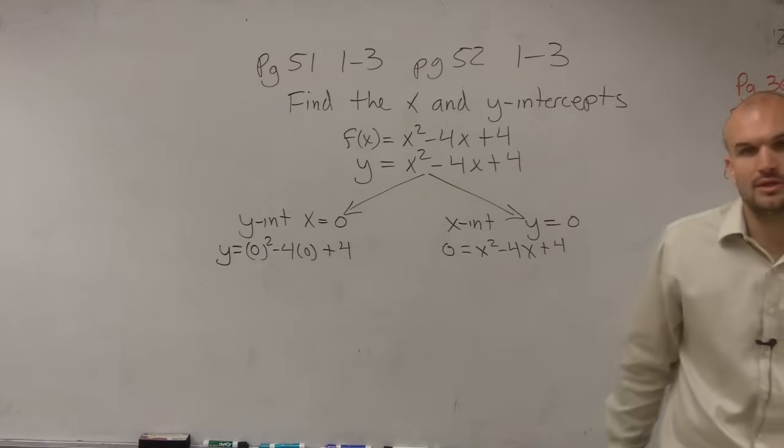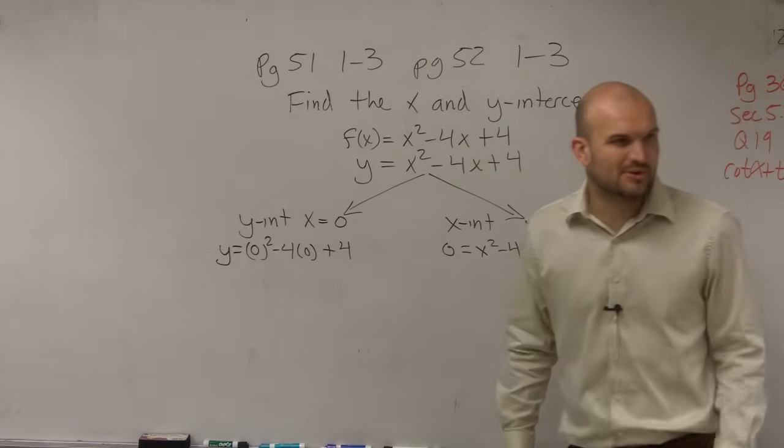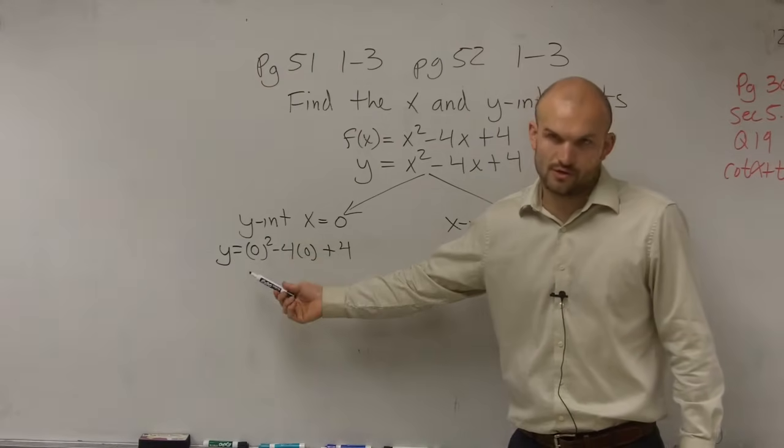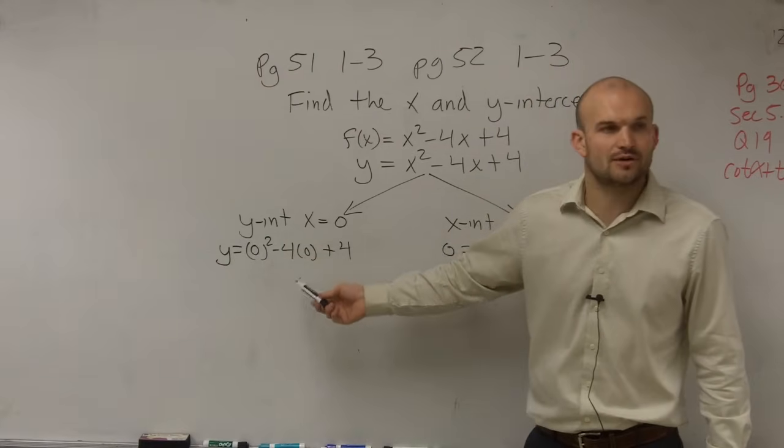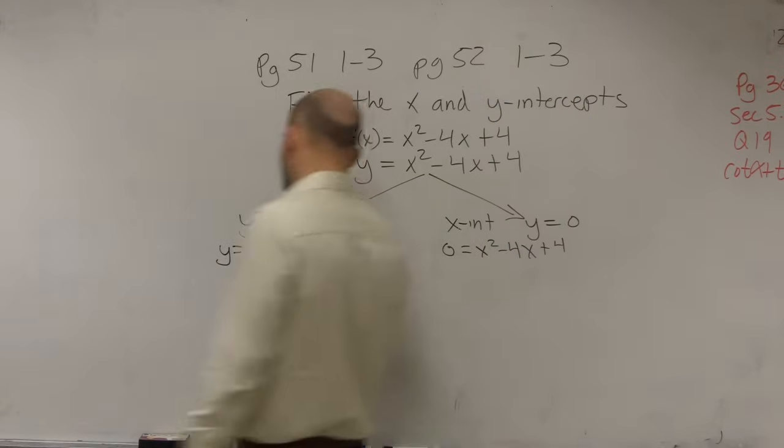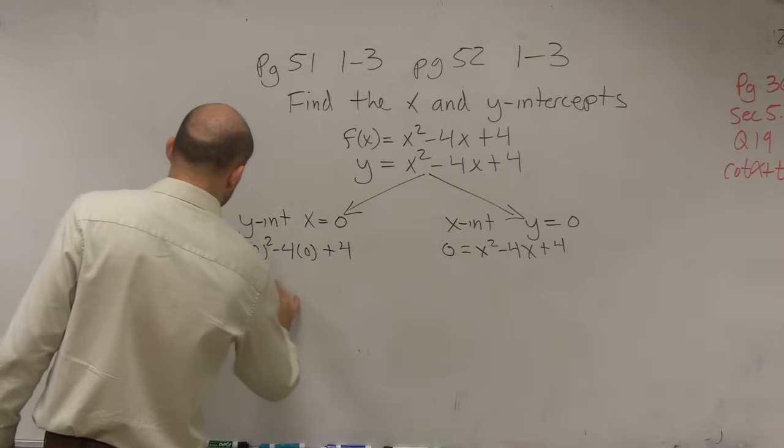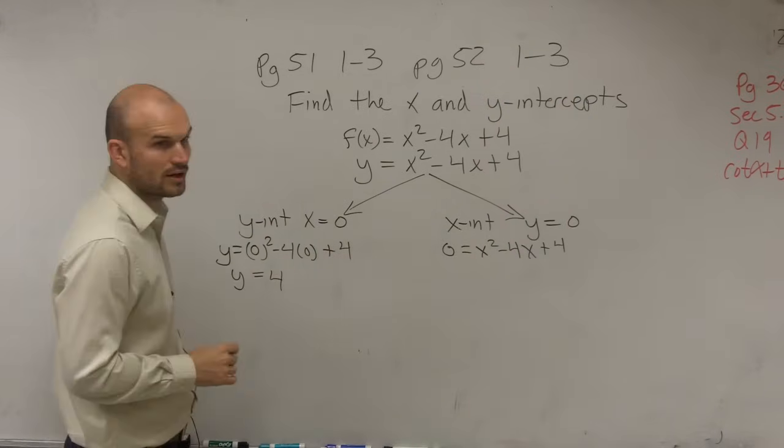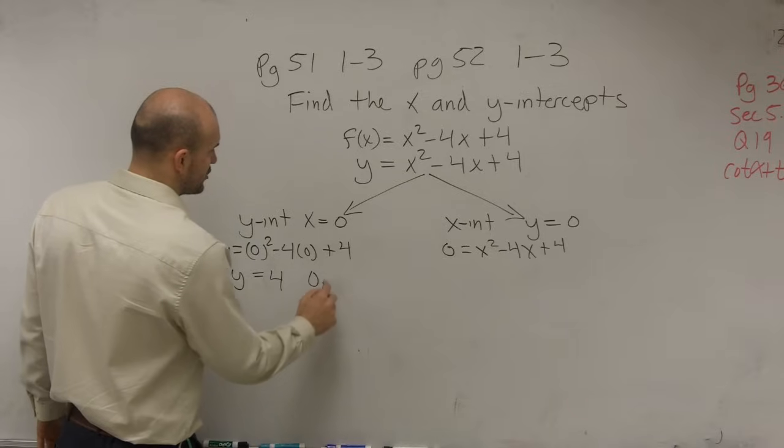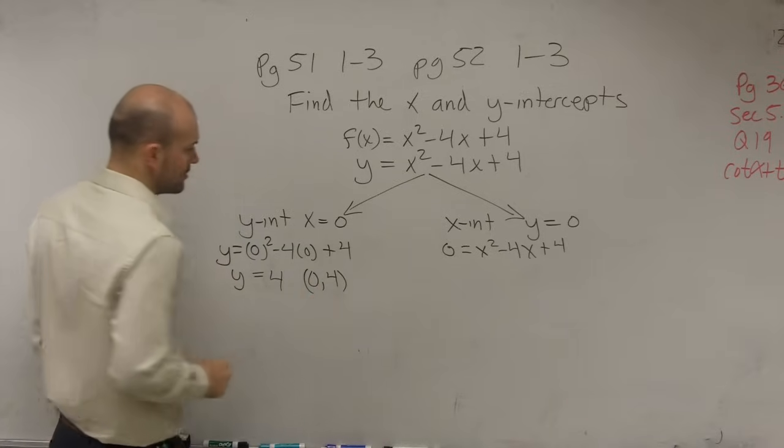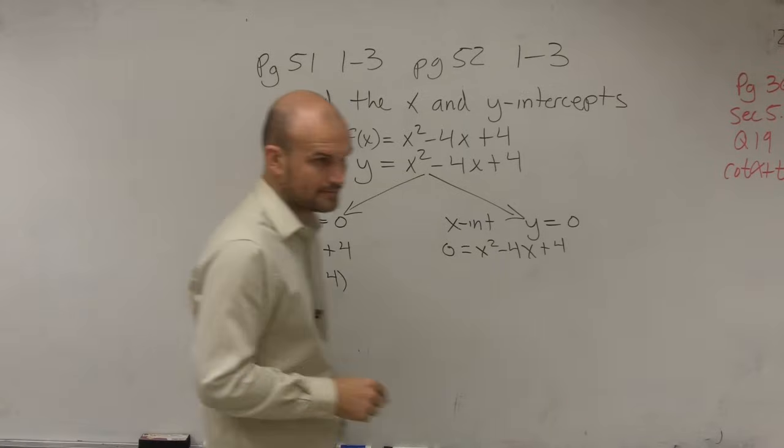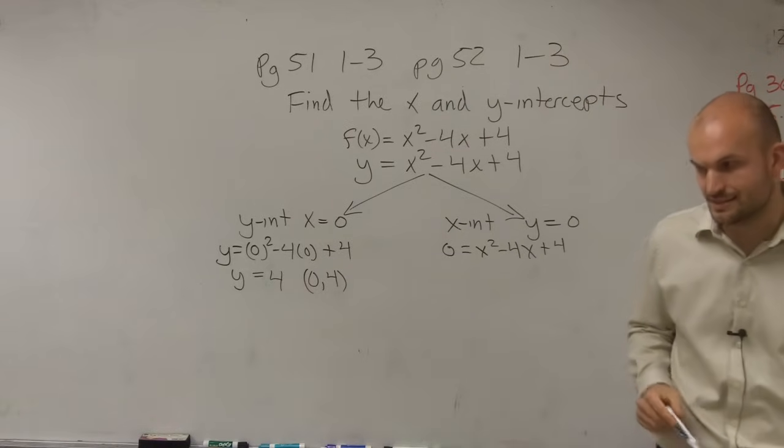So now, when looking at this, the y intercept is pretty basic, because 0 squared is 0, negative 4 times 0 is 0, so therefore, I have my y intercept is when y equals 4, which sometimes we like to write as a coordinate point of (0, 4). All right? And you guys are going to have to know how to do that and plot it.